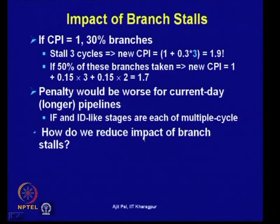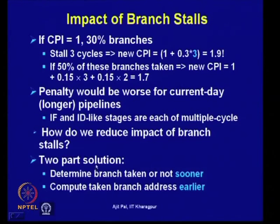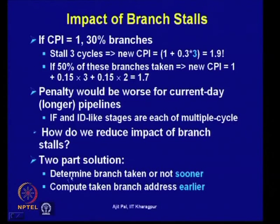To reduce the impact of branch stalls, there is a two-part solution. First, determine branch taken or not taken sooner. Second, compute the taken branch address earlier. If we can find out the branch outcome and know the address earlier in the pipeline, there is a possibility of performance gain. These two goals can be accomplished with additional hardware.